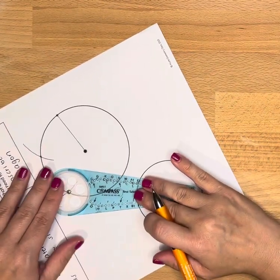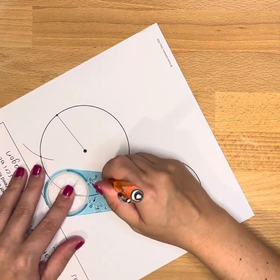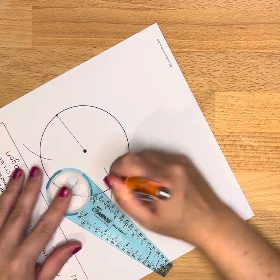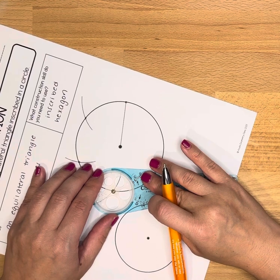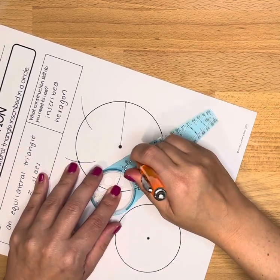And I'm going to keep repeating this process, rotating, going around the circle until I have a total of six points and that six includes the original point that we drew.